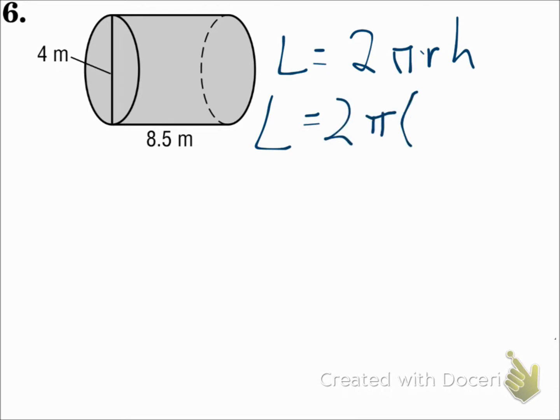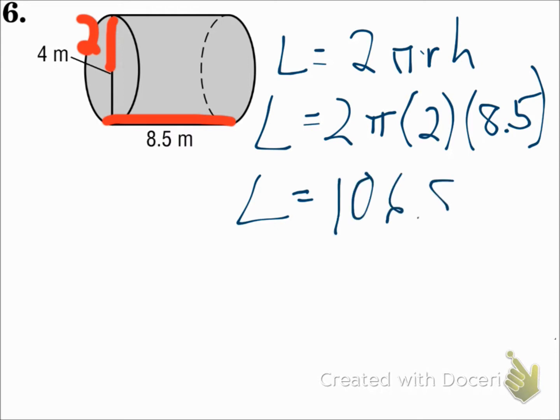The radius of this cylinder will be 2. The diameter is 4. The radius is half that, which is just 2. The height of the cylinder is 8.5. Remember, the height is the distance between the bases. In this one, it's 8.5. When you work that out, you get 106.8 meters squared.